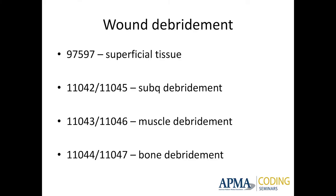11043 is debriding muscle or tendon — if you look in and see muscle and tendon but you're not actually debriding them, use the subcutaneous code. If you are debriding muscle or tendon, use 11043; it includes everything above it because you can't get to muscle or tendon without going through everything else. These codes talk about excision of tissue from the wound — if you're not excising it out, you're not debriding the wound under these categories.